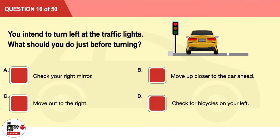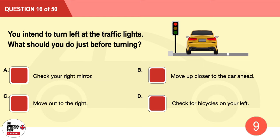Question 16: You intend to turn left at the traffic lights. What should you do just before turning? A: Check your right mirror. B: Move up closer to the car ahead. C: Move out to the right. D: Check for bicycles on your left. The correct answer is D: check for bicycles on your left.